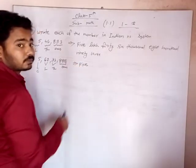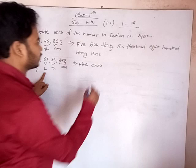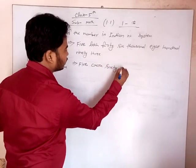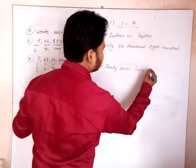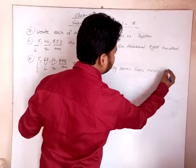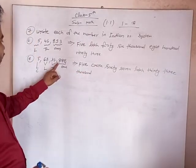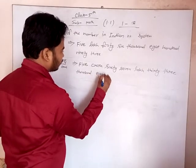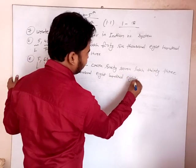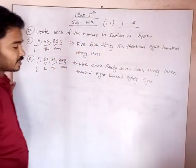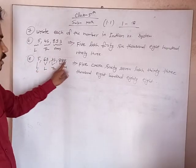Here it is 5 crore and 67 lakhs, 33,000, 888. Understand? 5 crore, 67 lakhs, 33,000, 888 — understand?